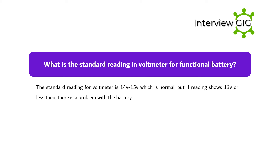What is the standard reading in a voltmeter for a functional battery? The standard reading for a voltmeter is 14V to 15V, which is normal. However, if the reading shows 13V or less, then there is a problem with the battery.